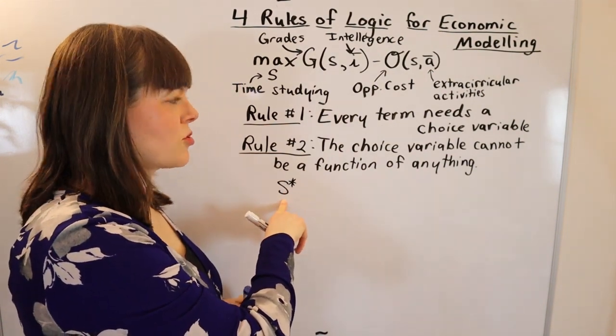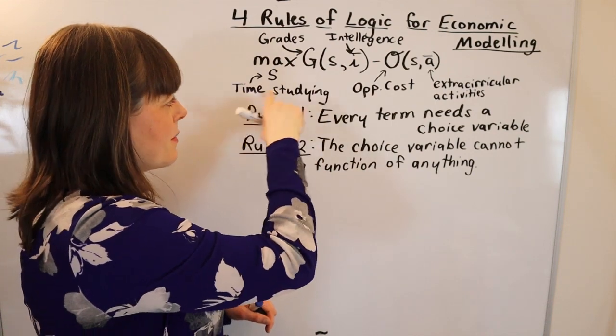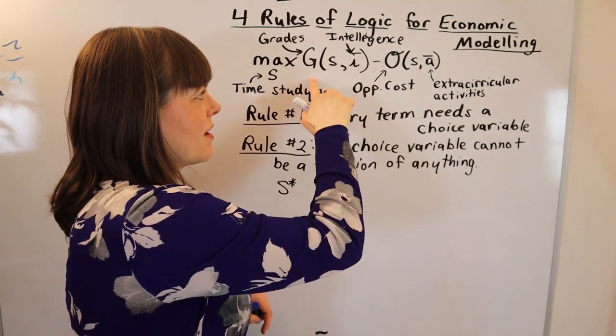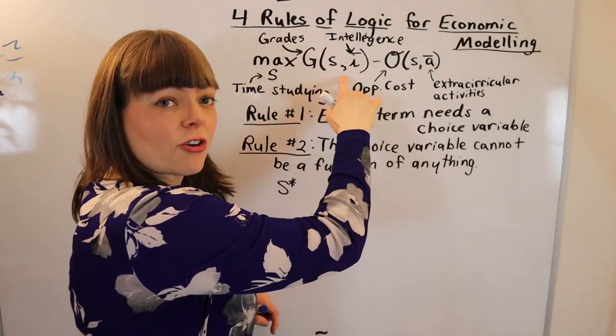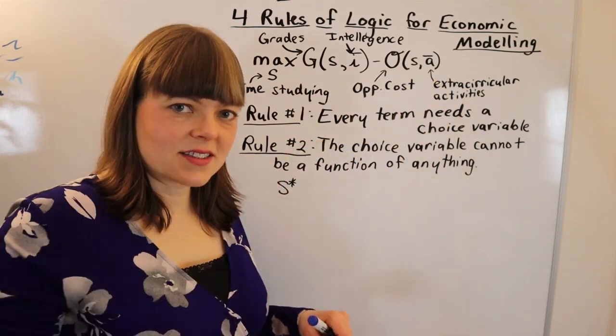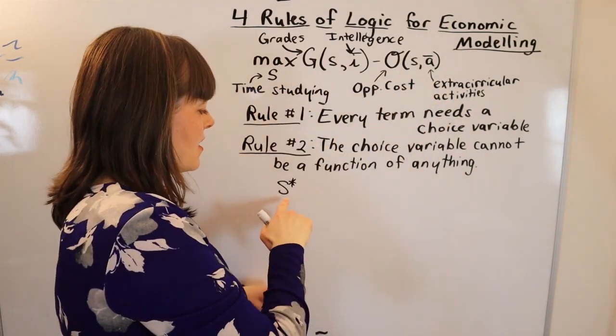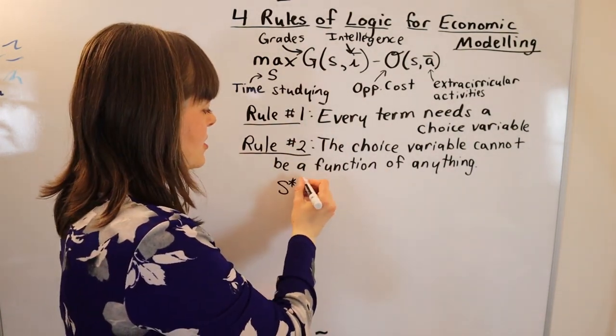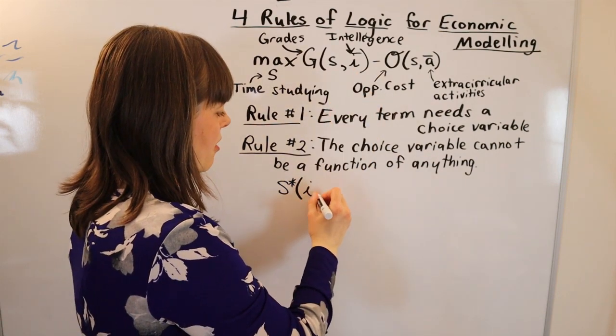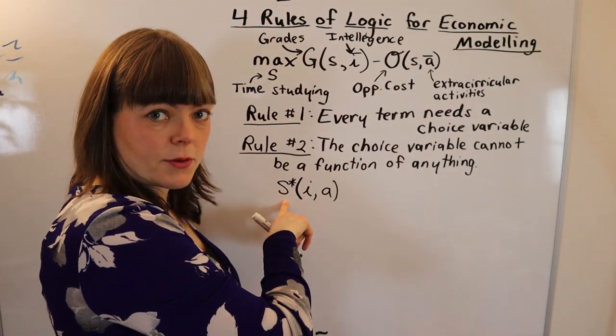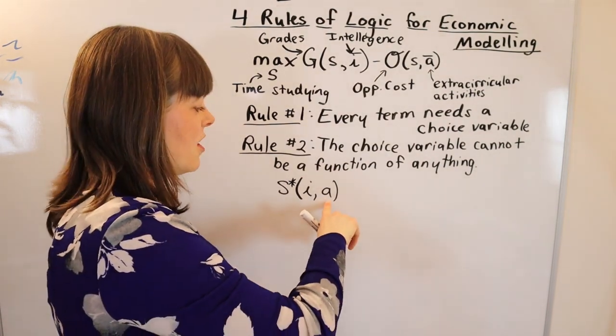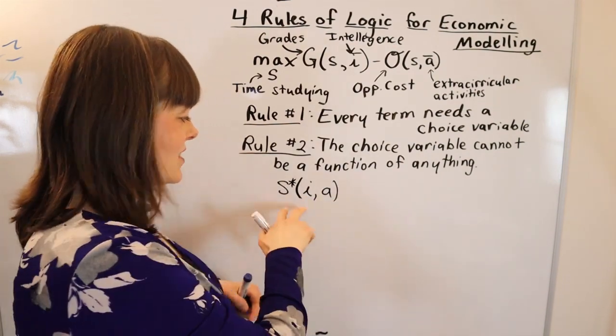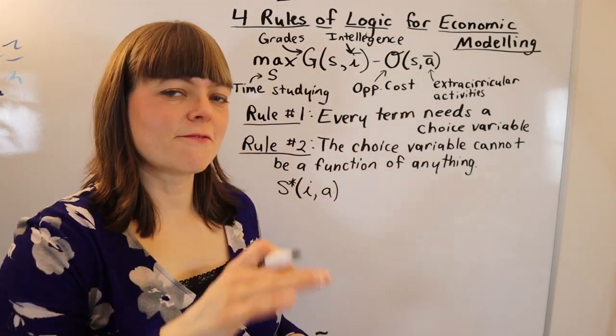S star is going to be the optimal choice of time spent studying, whereas time spent studying up here, S with no star, is your experimental time spent studying where you can experiment with an entire graph. S can take on any value you want up here. Down here, after you've solved your model, you have a specific value of S. Your S star is going to be a function of every exogenous variable in your model—it's a function of your intelligence and your extracurricular commitments. This will pop out of your model, and because of that, people often try to stick something like this into their model, which violates the logic.